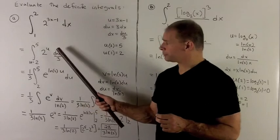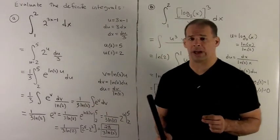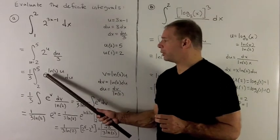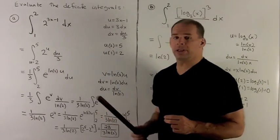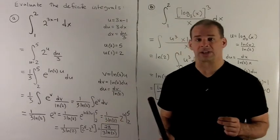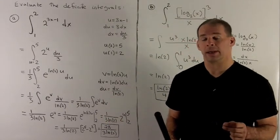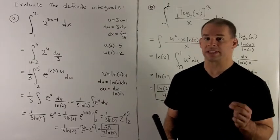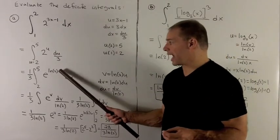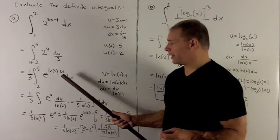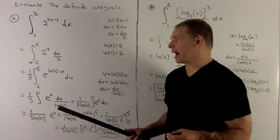So 2, I want to rewrite this in a way that is more useful for integration. We note e to the natural log of 2 is equal to 2, because e to the x and natural log of x are inverse functions. If I compose them in either order, they're going to cancel out, leaving me with x, or in this case, whatever's on the inside. So I'm going to have e to the natural log of 2 is 2, and then the u hangs out up on top.